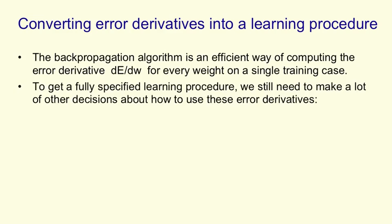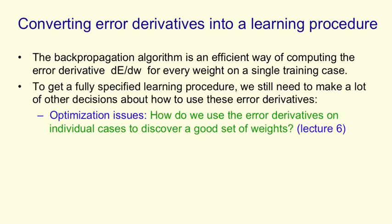We need to make lots of other decisions. Some of these decisions are about how we're going to optimize. That is, how we're going to use the error derivatives on the individual cases to discover a good set of weights. Those will be described in detail in Lecture 6.